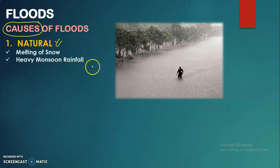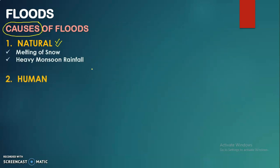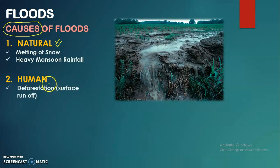Another cause is human factors. The first human activity is deforestation — the cutting of plants, trees, or vegetation. Trees act as a barrier during floods, so when there are no trees, there is no protection when floods come. This causes faster surface runoff compared to areas with plantation, ultimately creating more damage.